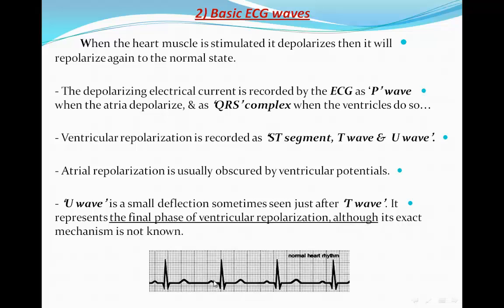This is the P wave — atrial depolarization. This is the QRS complex — ventricular depolarization. The end of the S wave and the junction between the S wave and ST segment is called the J point. Then the ST segment, followed by the T wave, and if there is a U wave, it will appear right after. This is ventricular repolarization. Atrial repolarization, which should appear here, is obscured by the QRS complex.